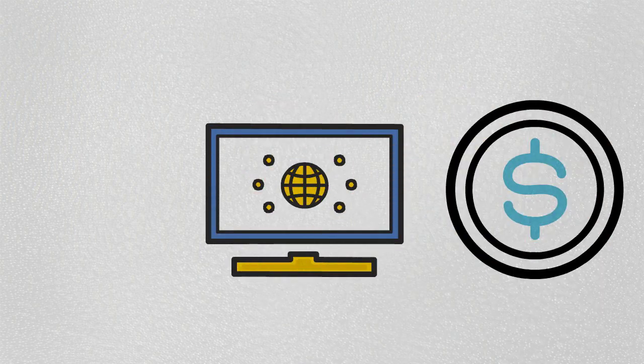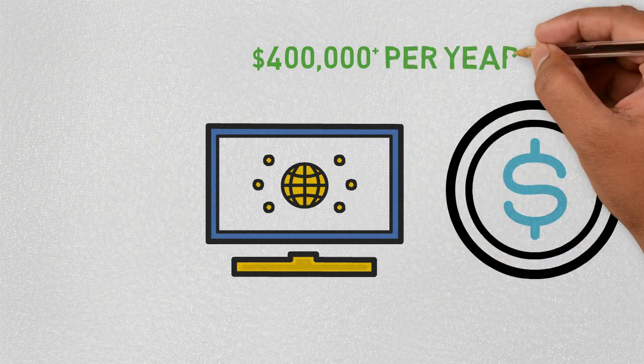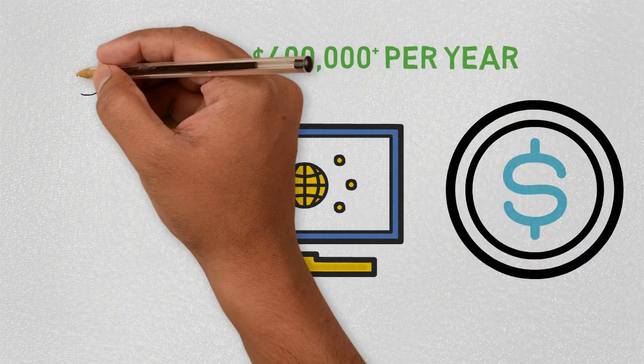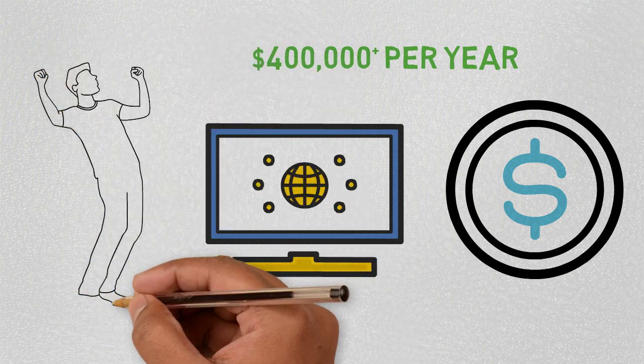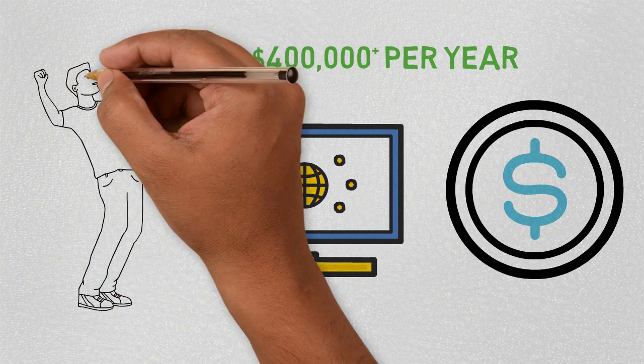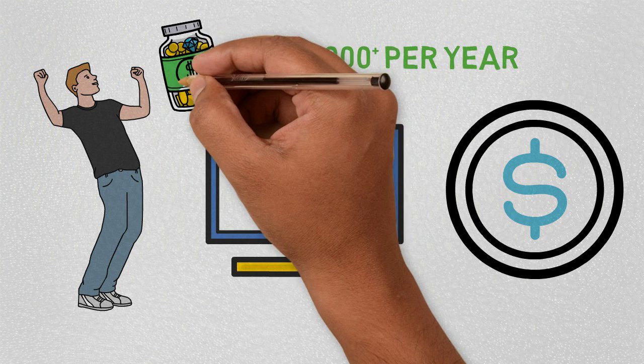The Mr. Money Mustache blog reportedly earned Pete over $400,000 per year, primarily from commissions collected from banks, investment services, and other financial products he recommends, bringing his estimated net worth upwards of $5 million. This post-retirement job incredibly created most of his wealth.